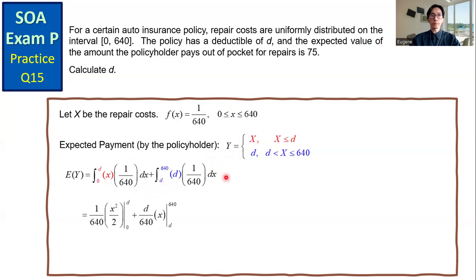Do the integration. And then we get the expression for E(Y) in terms of D: -D²/1280 + D. And this expression equals 75.